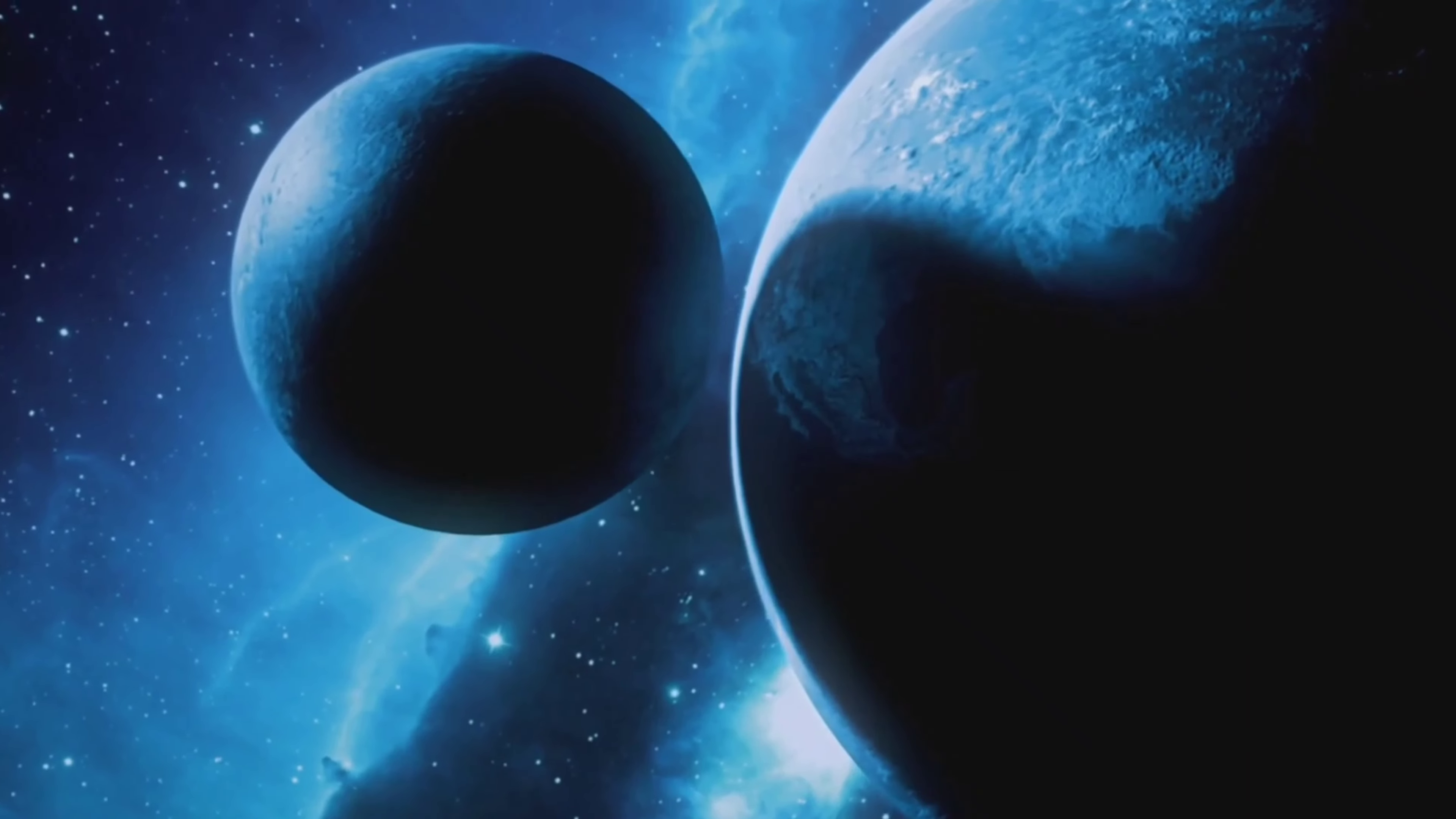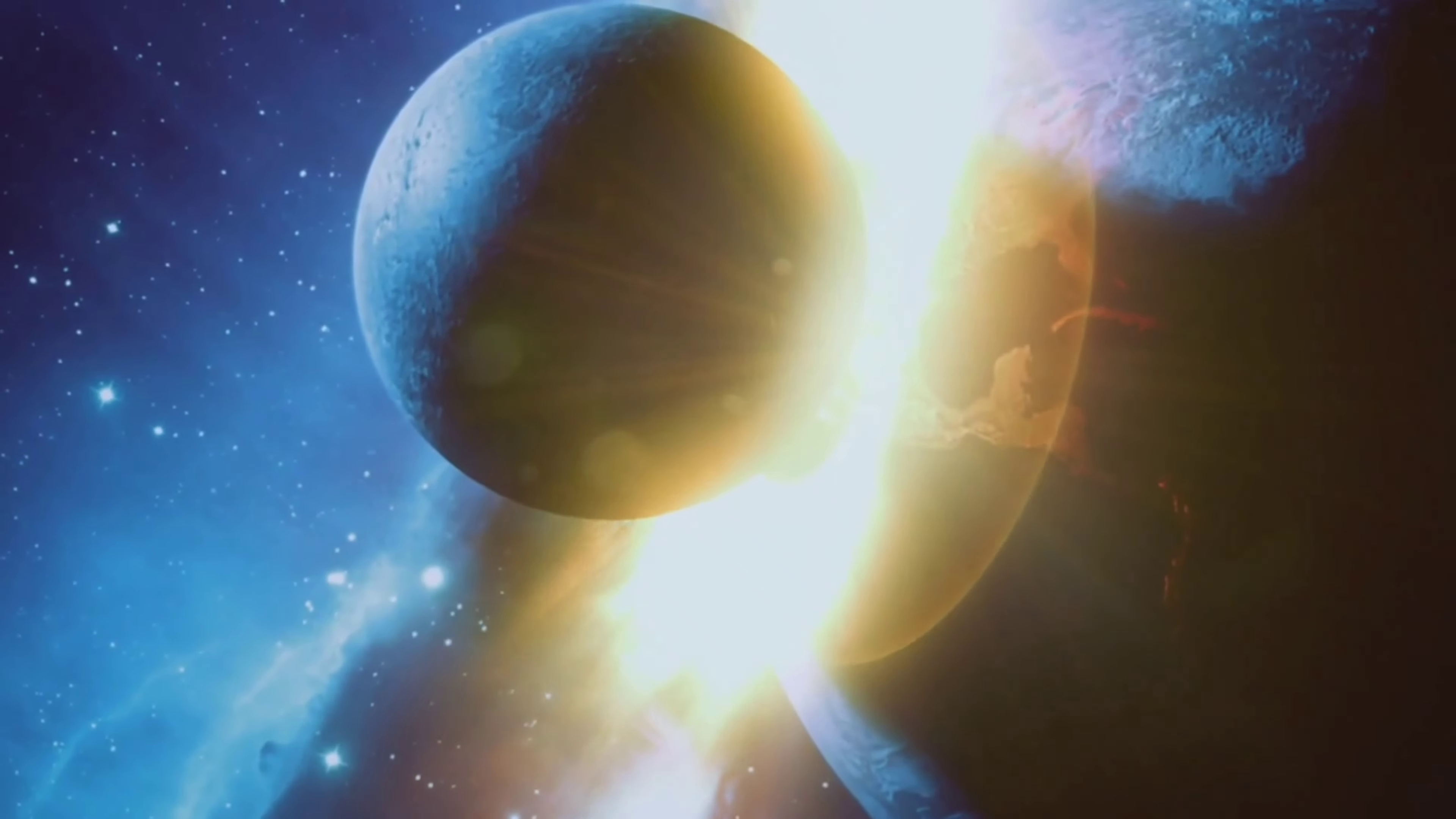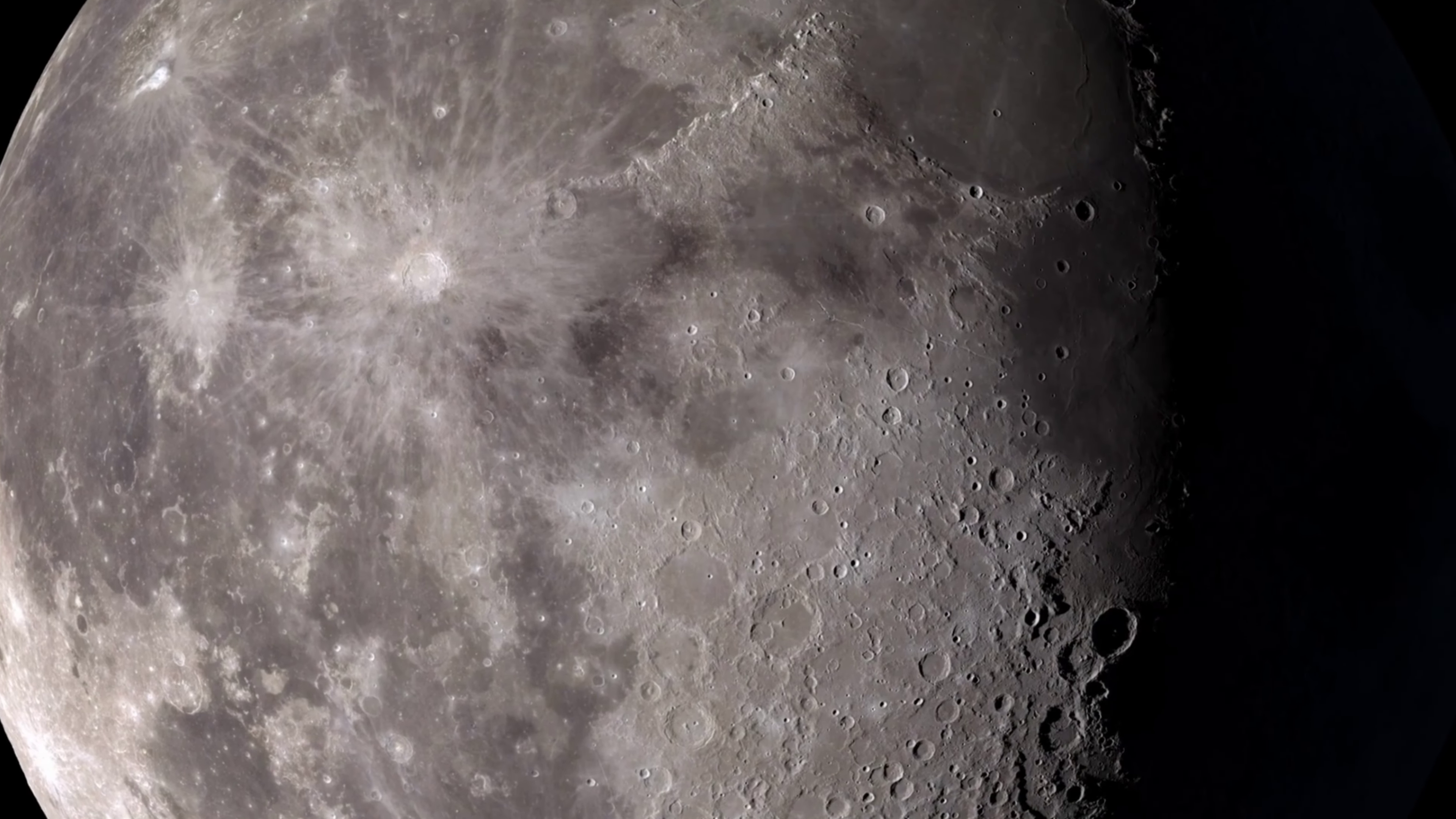The most widely accepted theory for the formation of the moon is the giant impact hypothesis, which suggests that the moon formed from debris ejected when a Mars-sized body collided with the early Earth. Another mystery of the moon is its internal structure.